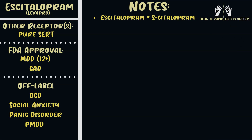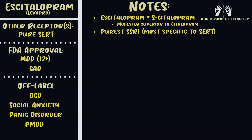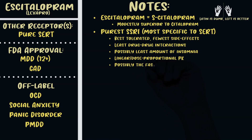For citalopram, the S-enantiomer is the one with the therapeutic effects we want. Escitalopram is modestly superior to citalopram in both efficacy and tolerability. The fact that Lexapro is a more selective version helps remember it's the most selective SSRI — basically only hitting SERT. This means it's one of the best-tolerated medications with the fewest side effects, probably the least insomnia, linear dose-proportional pharmacokinetics, and likely the fastest onset of action among the SSRIs.